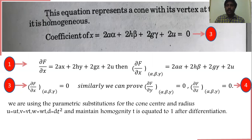Now we introduce T. We use the parametric substitution for the cone: instead of u, put ut; instead of v, put vt; instead of w, put wt; and instead of d, use dt². This maintains homogeneity, and t is equated to 1 after differentiation, as given in the problem.